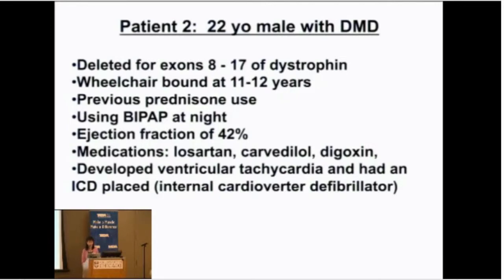The next patient is one of my Duchenne patients. He has a deletion in dystrophin, started full-time wheelchair use around age 11 to 12, had used prednisone in the past, was using his BiPAP at night, and his ejection fraction was around 40%. He was using Losartan — the angiotensin receptor blocker — Carvedilol, which is a beta blocker, and Digoxin, another medicine we use for heart failure. He developed ventricular tachycardia, which is a life-threatening arrhythmia affecting the bottom chamber of the heart.